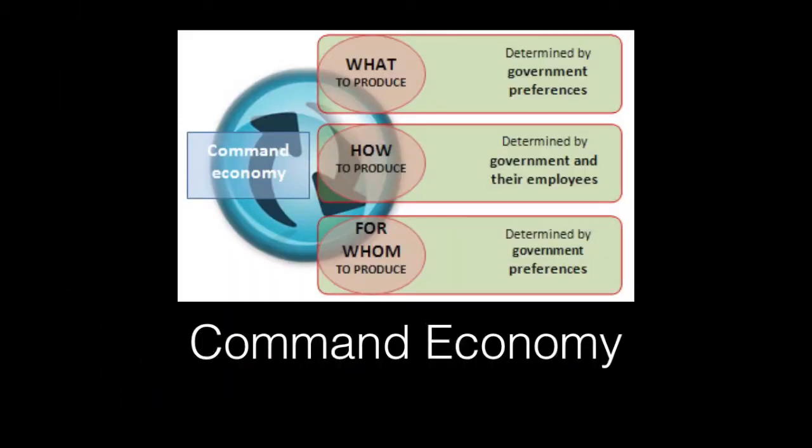The second type of economy is known as a command economy. In this type of economy, the government owns all of the businesses and makes all of the decisions, such as where people work and how resources are used. Up until the 1970s, China practiced this type of economy.